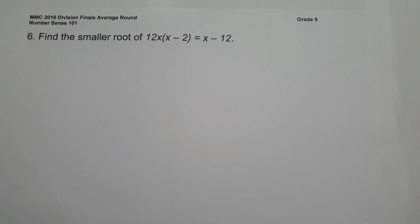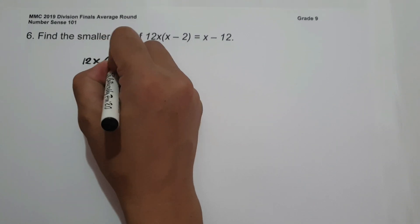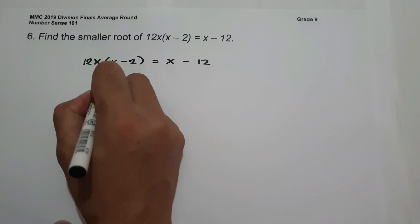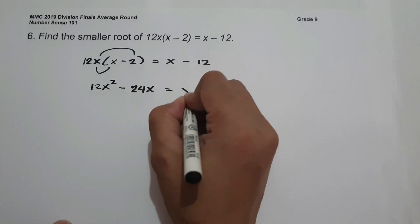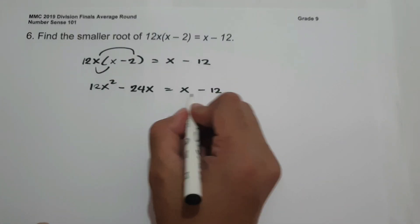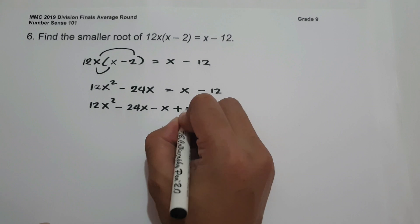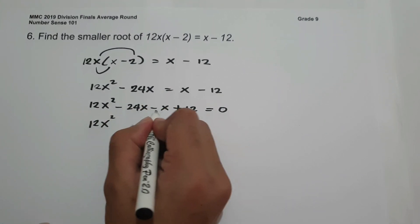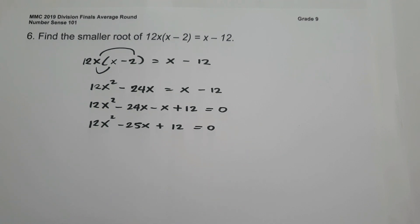On number 6, find the smaller root of 12x times the quantity (x minus 2) equals x minus 12. Expanding, 12x times x gives 12x squared, and 12x times negative 2 gives negative 24x, so 12x squared minus 24x equals x minus 12. Moving all terms to one side: 12x squared minus 24x minus x plus 12 equals 0, which simplifies to 12x squared minus 25x plus 12 equals 0.